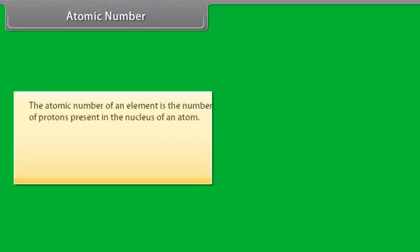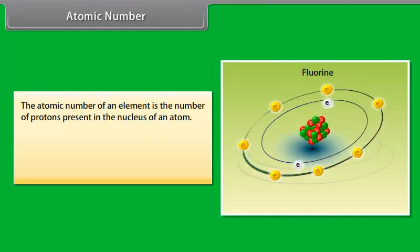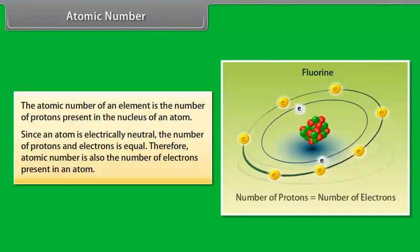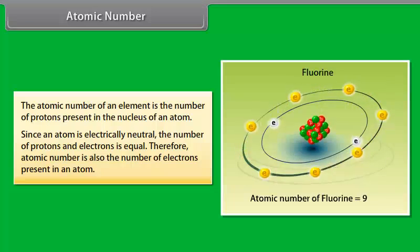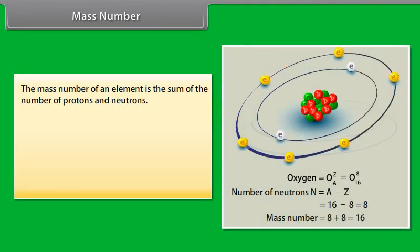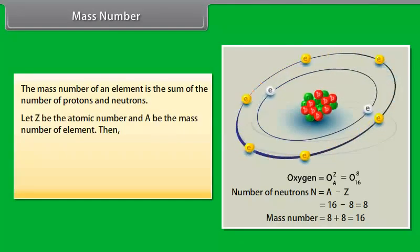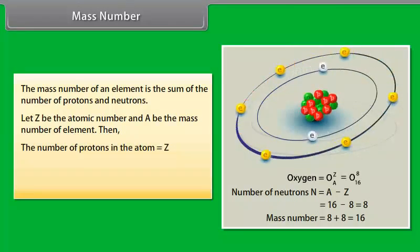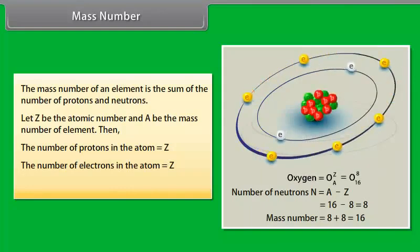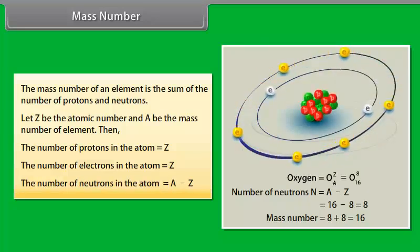Atomic number. The atomic number of an element is the number of protons present in the nucleus of an atom. Since an atom is electrically neutral, the number of protons and electrons is equal. Therefore, atomic number is also the number of electrons present in an atom. Mass number. The mass number of an element is the sum of the number of protons and neutrons. Let Z be the atomic number and A be the mass number of element. Then the number of protons in the atom is equal to Z. The number of electrons in the atom is equal to Z. The number of neutrons in the atom is equal to A minus Z.